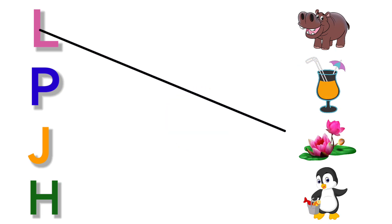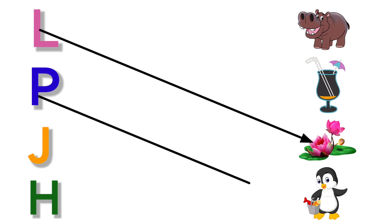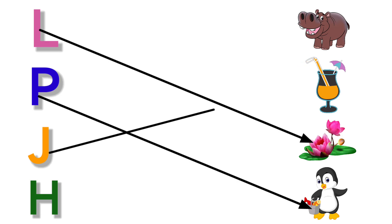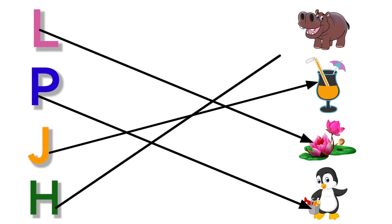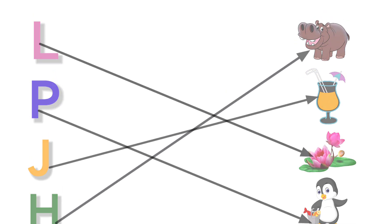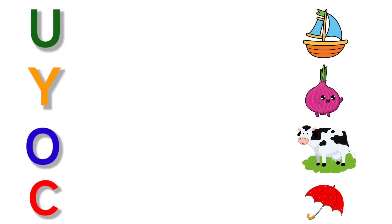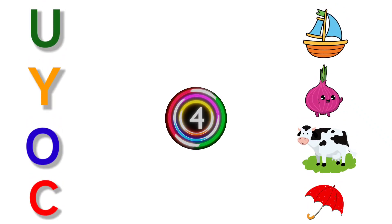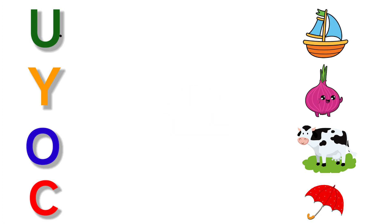L for Lotus, P for Penguin, J for Juice, H for Hippo, U for Umbrella.